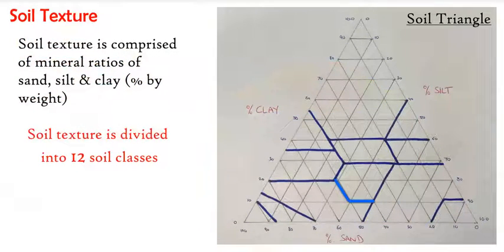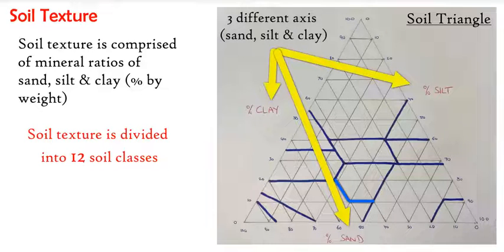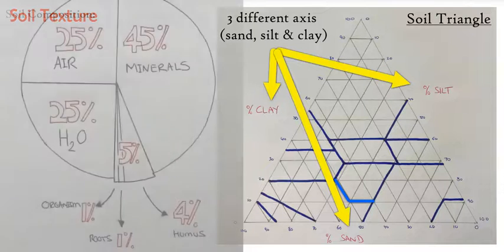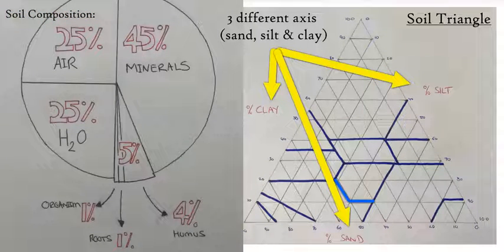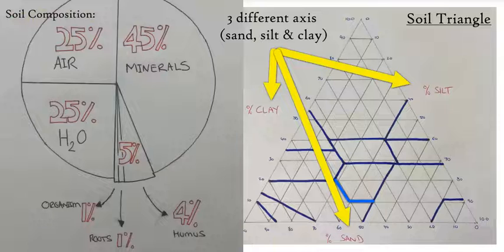There are 12 soil classes of texture that you can calculate using this triangle and the different axes to calculate exactly what you have. Once you have the soil texture, you can then break down the soil in more detail with more and more characteristics.